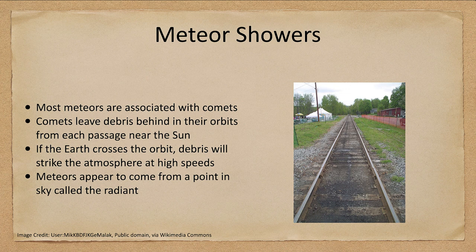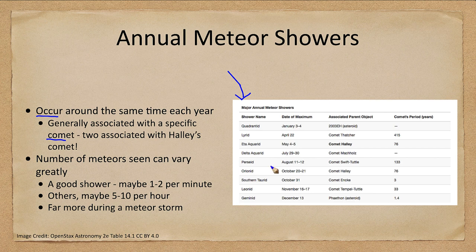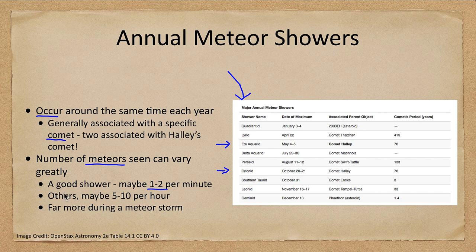It is just an optical effect that causes them to appear to come from the same radiant point, and that is how meteor showers are named — after the region or constellation they appear to come from. Meteor showers occur around the same time each year, generally associated with a specific comet. For example, two showers associated with Halley's comet occur in early May and October. In a good shower like the Perseids, you might see one or two meteors per minute.